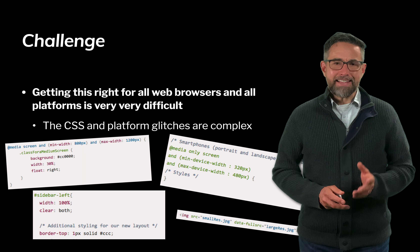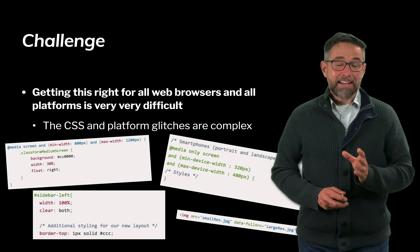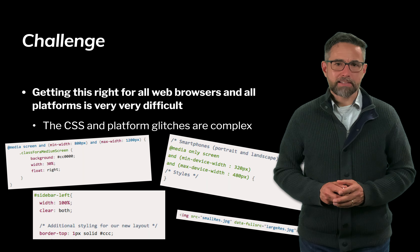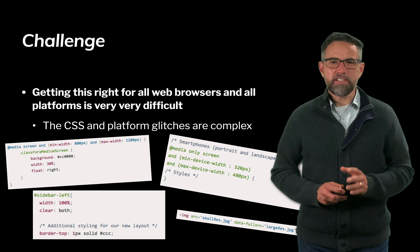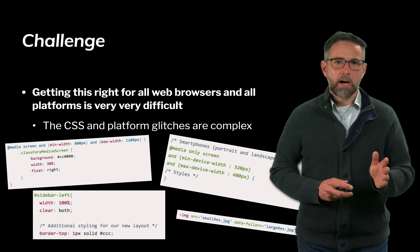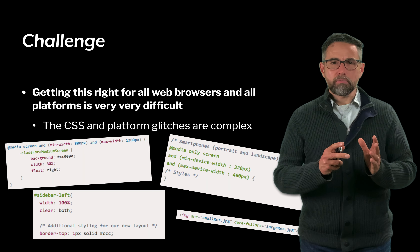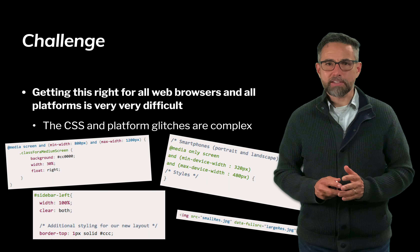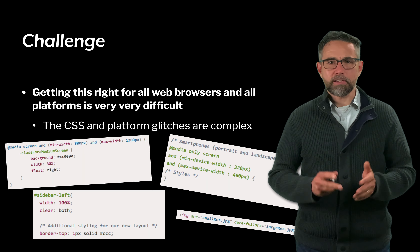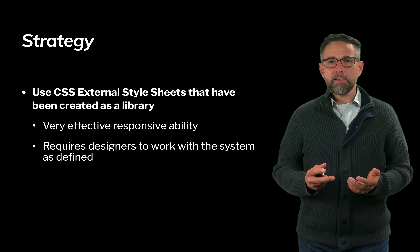The challenge is that getting this right across all browsers and platforms is very difficult, because CSS and platform glitches are complex. Writing different CSS and HTML variants to accommodate each platform doesn't solve the problem — it's effectively writing multiple codebases for different platforms. What we'd like to do is abstract this away and work with one library that does this work for us, interacting with the library and letting it handle all the differences.